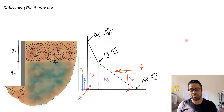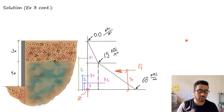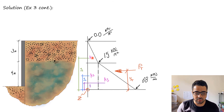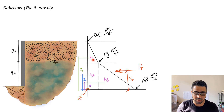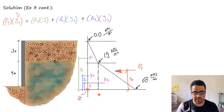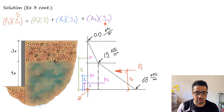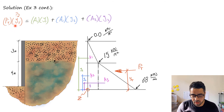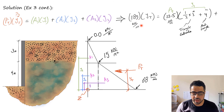Taking moments about point Z: each area (force) is multiplied by its centroidal arm from point Z. So: Area 1 × arm 1 + Area 2 × arm 2 + Area 3 × arm 3 = Total Force × ȳ. We solve for ȳ, the location of the resultant. Total force is 189 kN/m, which we already found.